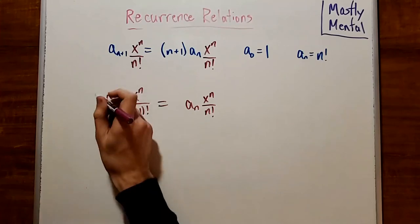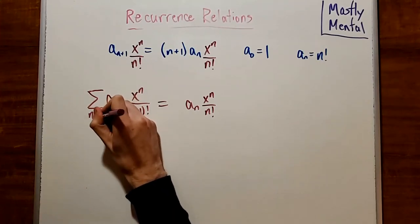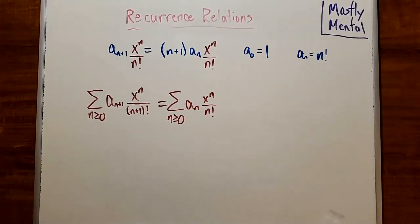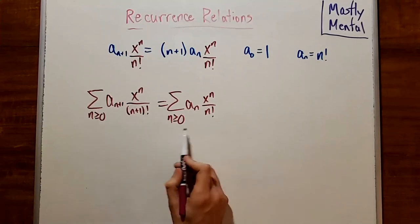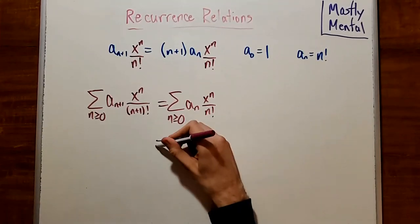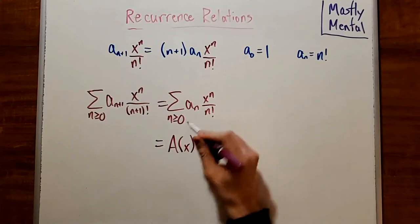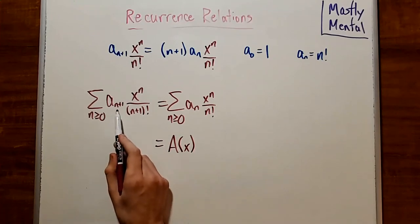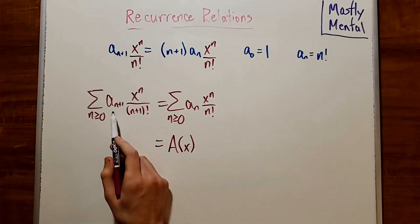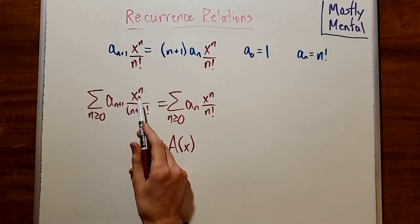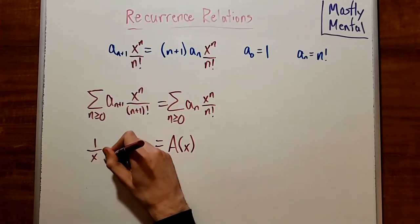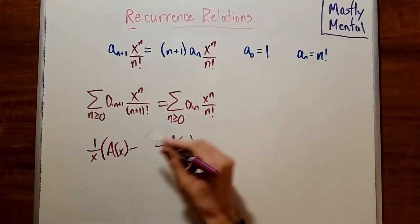Next, we're going to take our sum over all values of n, so n greater than or equal to 0. And then we're going to express each of these sums in terms of our generating function A(x). This term on the right here is already A(x), so we don't need to do anything there. And this sum on the left is almost A(x), but it's starting from a_1. So it's missing the a_0 term and it has an x^n instead of an x^{n+1}. So that's going to give us 1 over x times (A(x) minus a_0), which is 1.